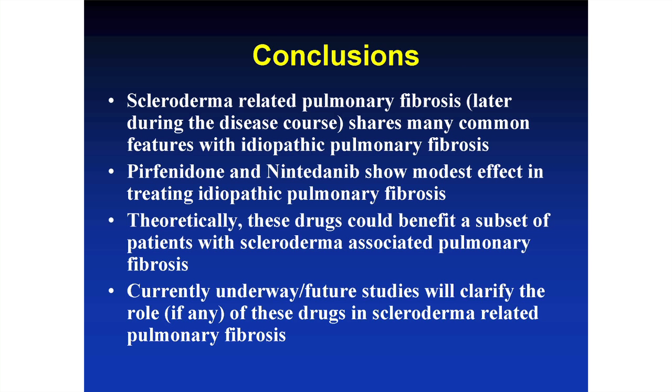To summarize: scleroderma-associated interstitial lung disease or pulmonary fibrosis shares common mechanisms with idiopathic pulmonary fibrosis. Later in the course of scleroderma-associated ILD, we don't have effective therapies, but we do have two therapies — pirfenidone and nintedanib — which have a modest benefit in patients with IPF. These therapies should and will be explored in patients with scleroderma. It remains to be seen whether they will be effective, but it is possible they may have benefit. Studies currently underway will answer this question.